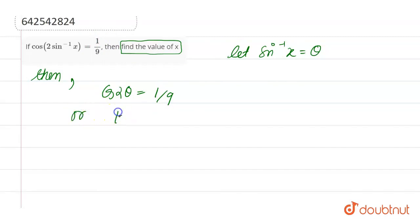Or, we get 1 minus 2 sin square theta is equal to 1 by 9. Cos 2 theta is equal to 1 minus 2 sin square theta.